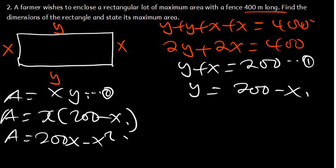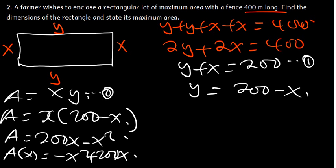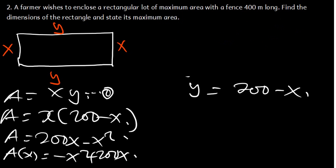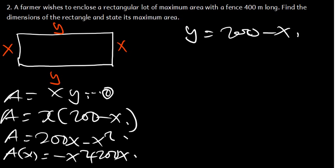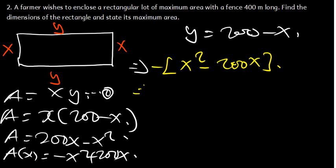This is now a quadratic function. We can write it as A = negative X squared plus 200X. Using the completing the square method again, we factor out negative 1, getting negative open bracket X squared minus 200X. Then we take half of negative 200, which is negative 100, add negative 100 squared, and subtract it again.